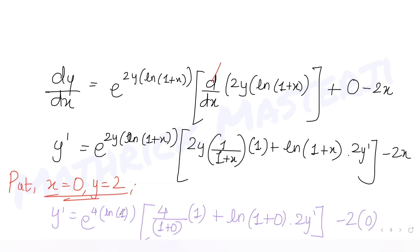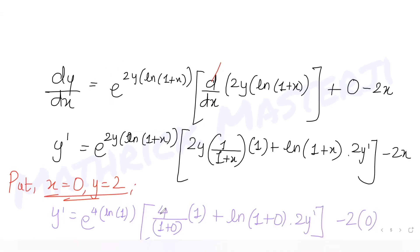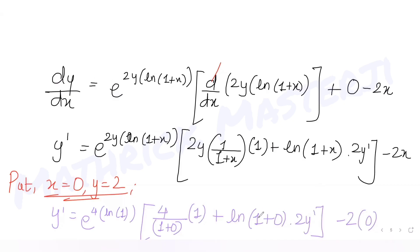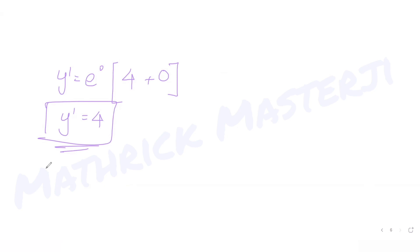Solving this: ln(1) is 0, so the exponent becomes 0, and e^0 = 1. In the bracket, you have 4/1 × 1 = 4, plus ln(1) which is 0, minus 0. So y' = 1 × 4 = 4. The slope of the tangent to the curve is 4.